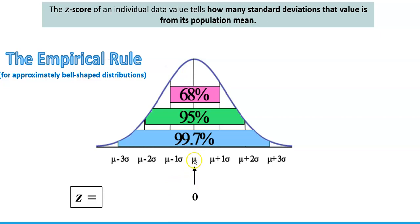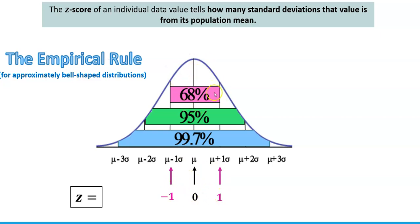Since we've defined the number of standard deviations from the mean as the z-score, let's redefine the empirical rule in those terms. When a value is positioned right at the mean, its z-score equals zero. Moving one standard deviation to the right gives a z-score of exactly 1, and one standard deviation to the left gives a z-score of negative 1. Values with z-scores between negative 1 and 1 make up 68% of the entire data set.